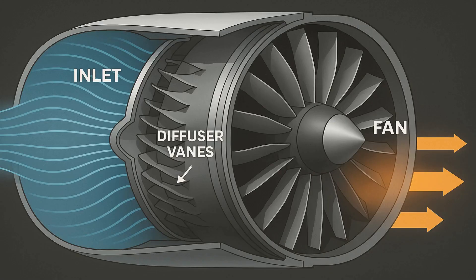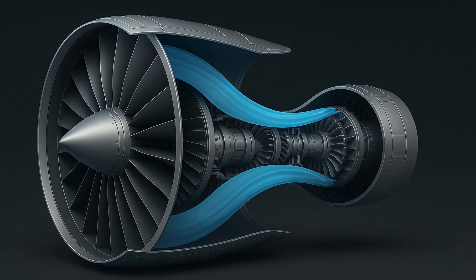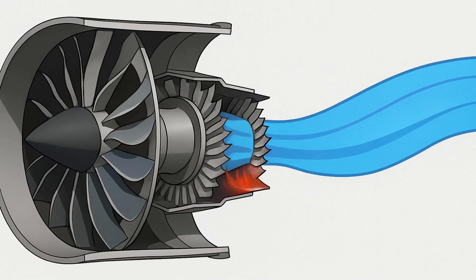After entering through the inlet, air meets the fan, which often measures over 8 feet in diameter on large commercial engines. Each blade has a twist — wider near the hub and thinner at the tip. That geometry ensures the blade moves at roughly the same relative speed through the air along its length, maximizing efficiency. The fan produces most of the thrust by accelerating a large mass of air a small amount. Bypass ratios above 10 to 1 mean 10 times more air bypasses the core than enters it. That cold stream cuts fuel burn, lowers noise, and reduces heat in the core.